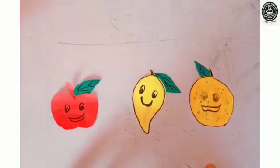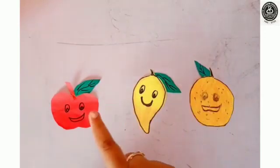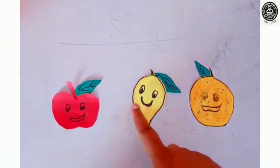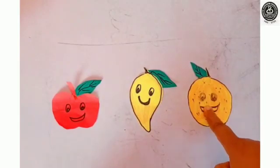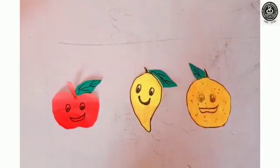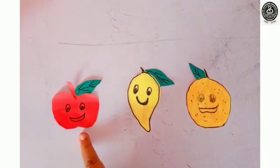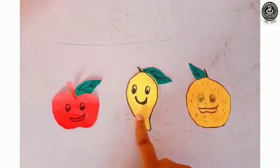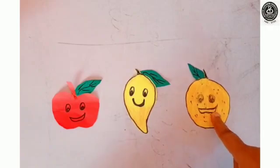Children, here fruits are here. Three fruits are here. This is an apple, a mango, and orange. Can you tell me which fruit is before mango? Yes, you are right. An apple. An apple is before a mango. Children, can you tell me which fruit is after a mango? Yes, an orange. Right, an orange is after a mango.